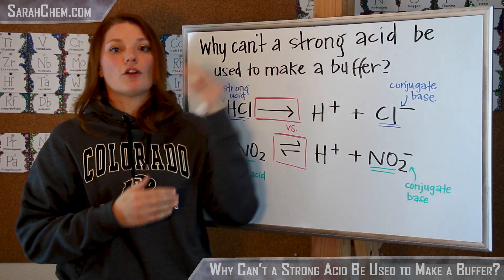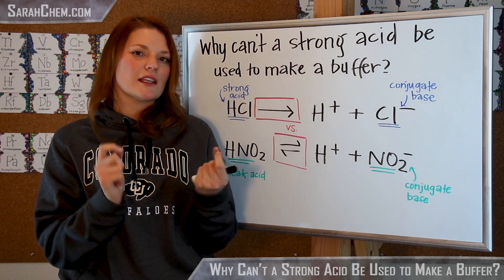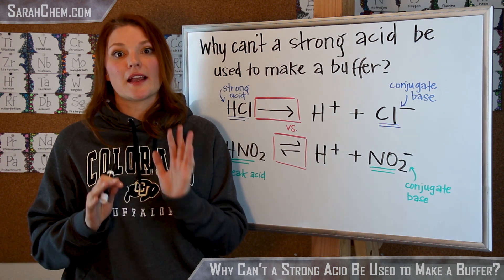So a strong acid will fully dissociate, a weak acid will only partially dissociate. And that's kind of the key to understanding what this has to do with making a buffer.